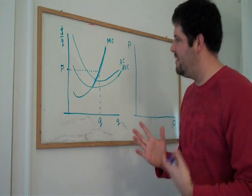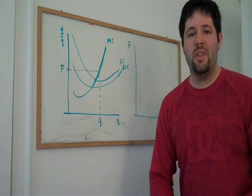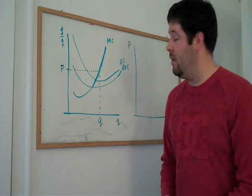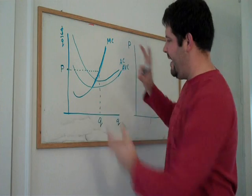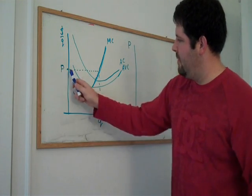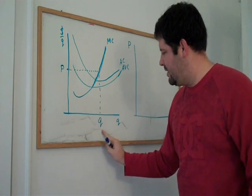So what does this imply for the entire industry's supply curve? Let's take a simplification. Let's say that every firm is exactly like this one. Now, if every firm is just like this one, every firm is supplying Q.